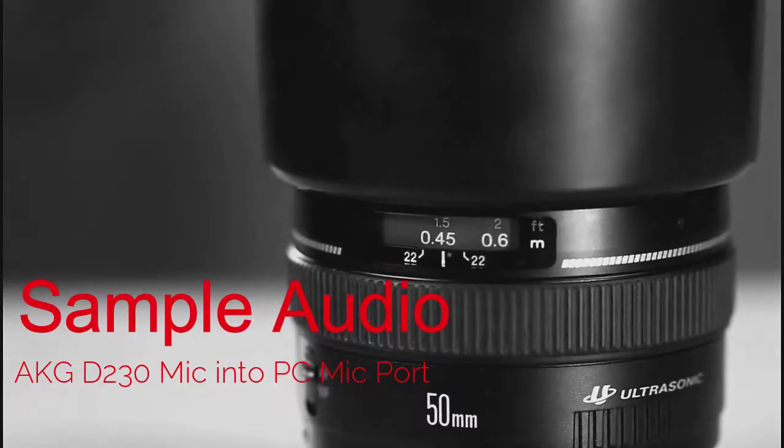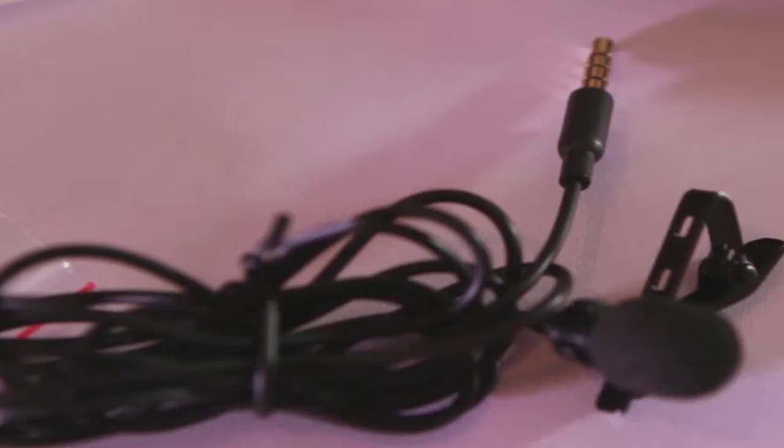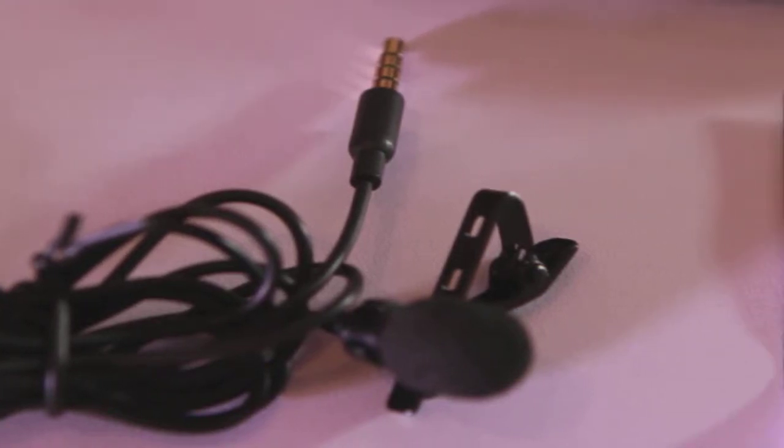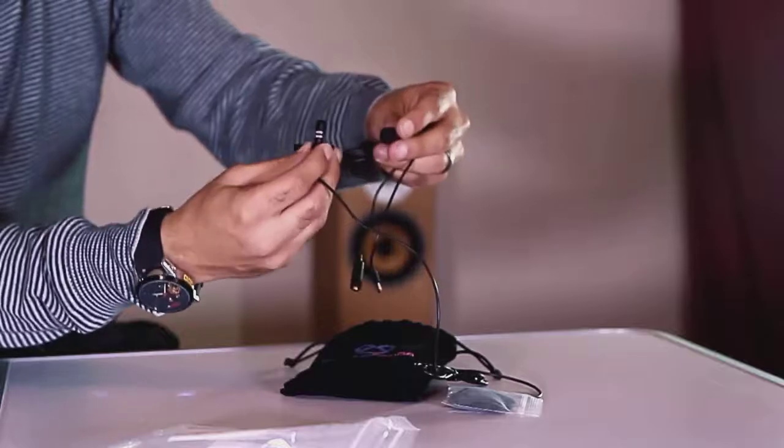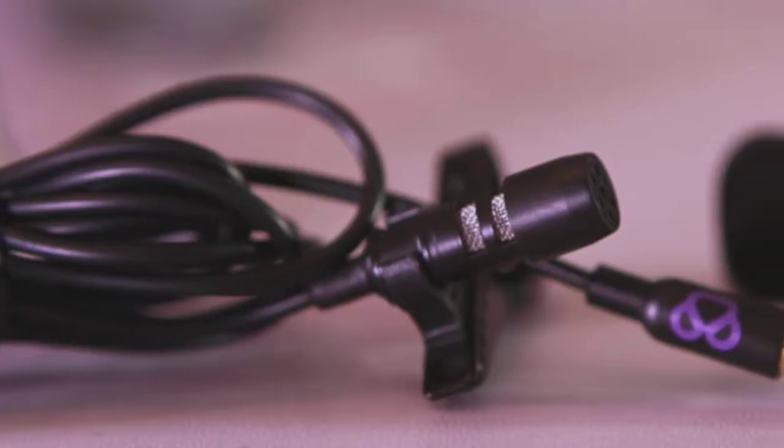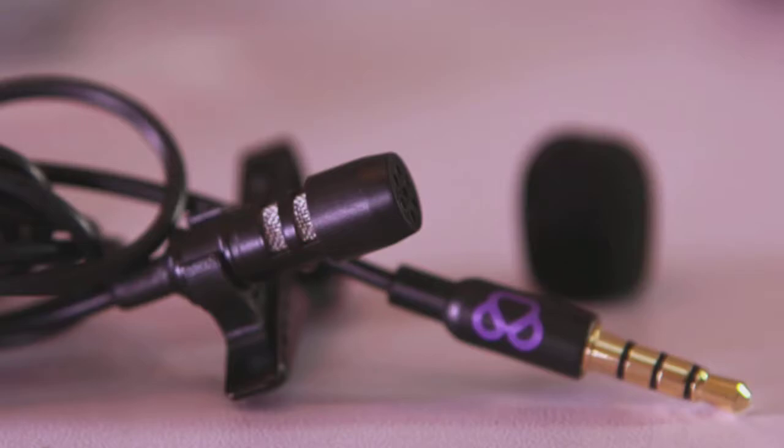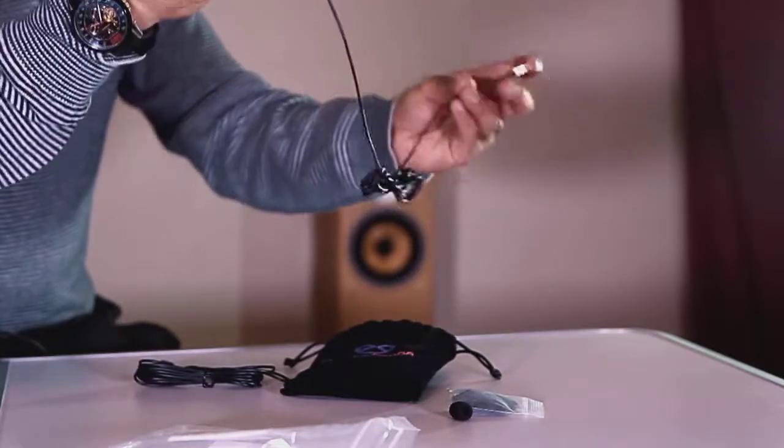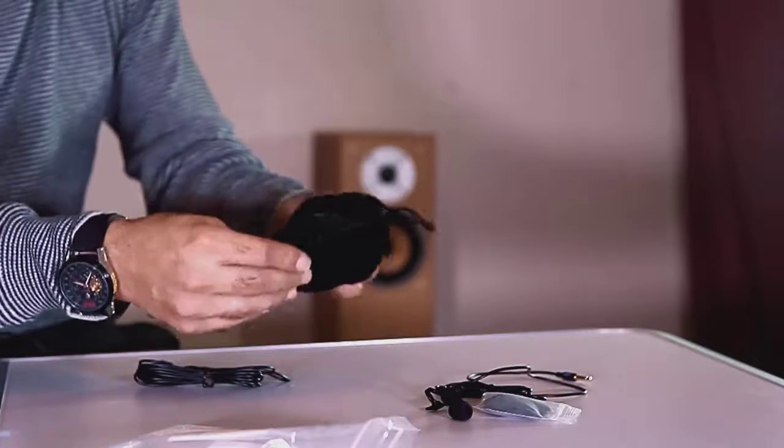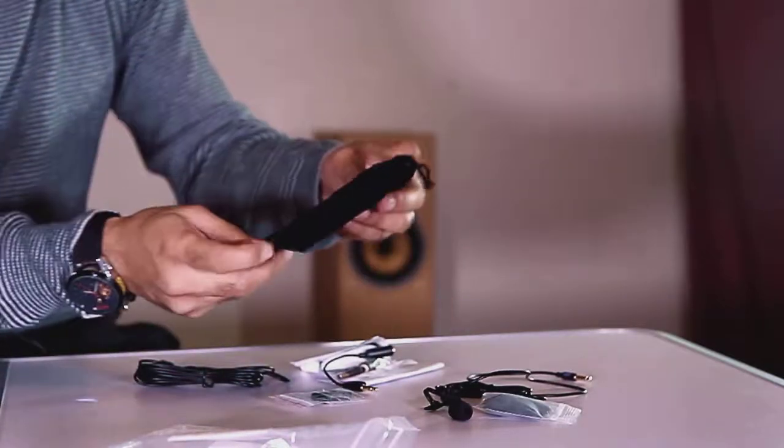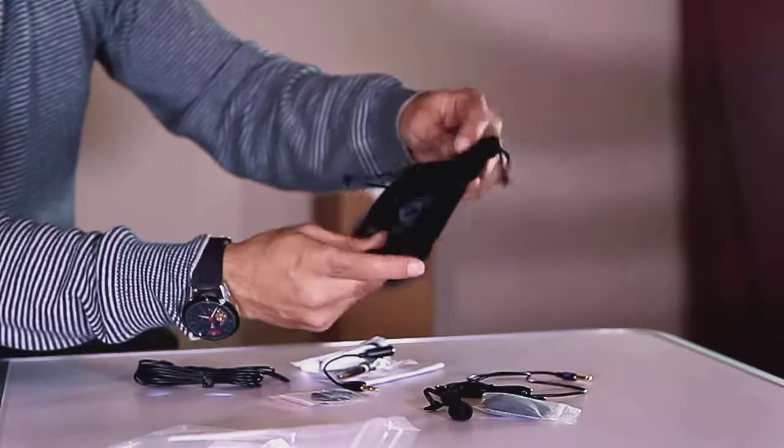This one here is the third option, a Purple Panda lavalier lapel microphone. It's an omnidirectional condenser mic and it's a clip-on one. You can see here based on these close-ups, it's a decent quality mic with a metal cage. It comes in a kit so you get a few extras with it. I'll show you what that sounds like.